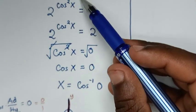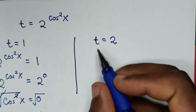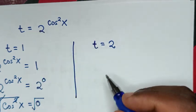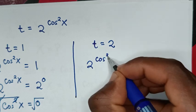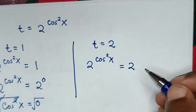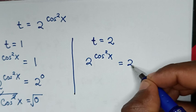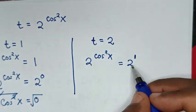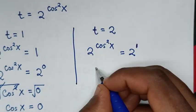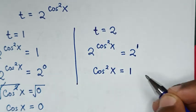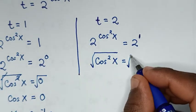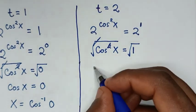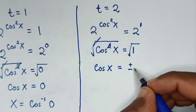Continuing with t = 2: 2^(cos²x) = 2. Writing 2 as 2^1, since the bases are the same we compare powers: cos²x = 1. Applying square root to both sides gives cos x = ±1, so we have two more solutions to solve.